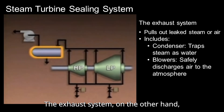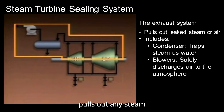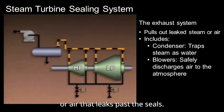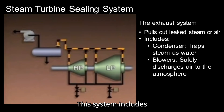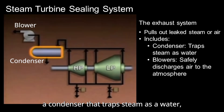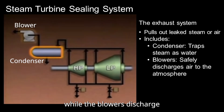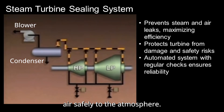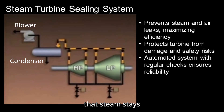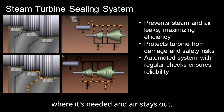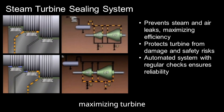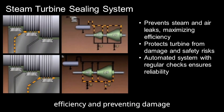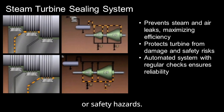The exhaust system, on the other hand, pulls out any steam or air that leaks past the seals. This system includes a condenser that traps steam as water, while the blowers discharge air safely to the atmosphere. Together, these systems ensure that steam stays where it's needed and air stays out, maximizing turbine efficiency and preventing damage or safety hazards.